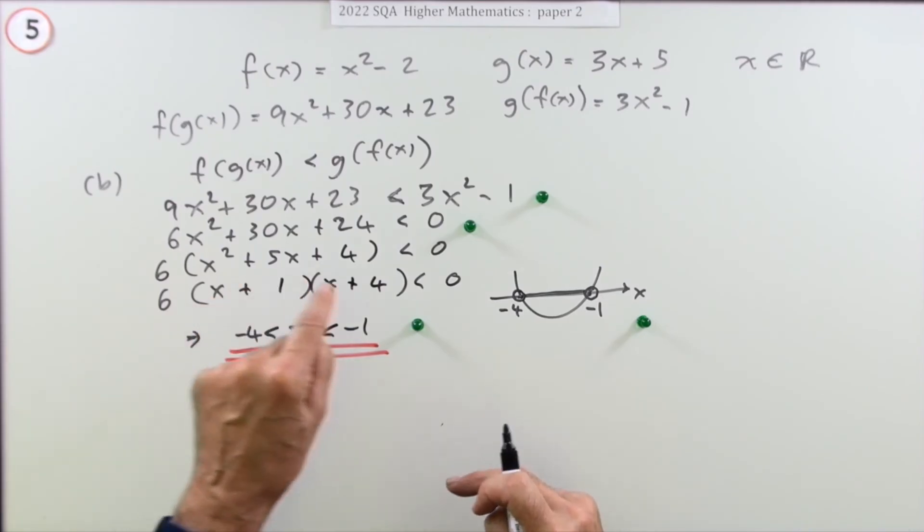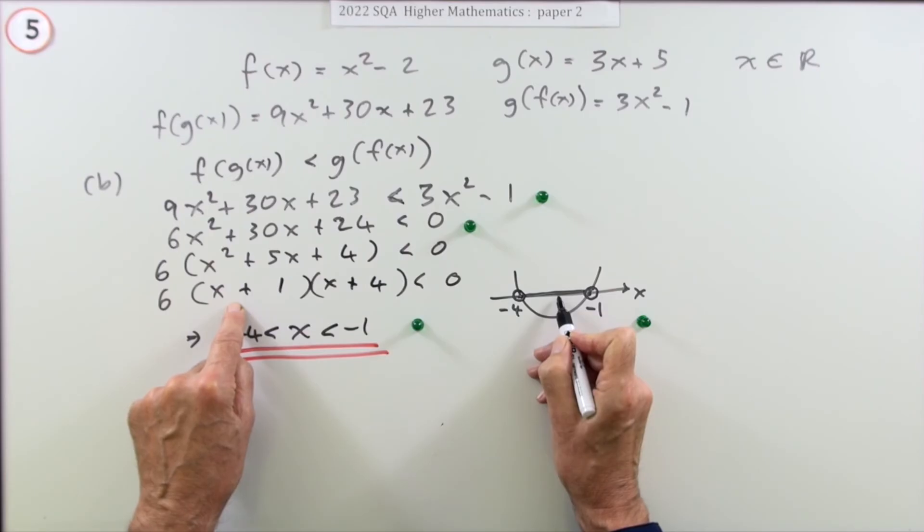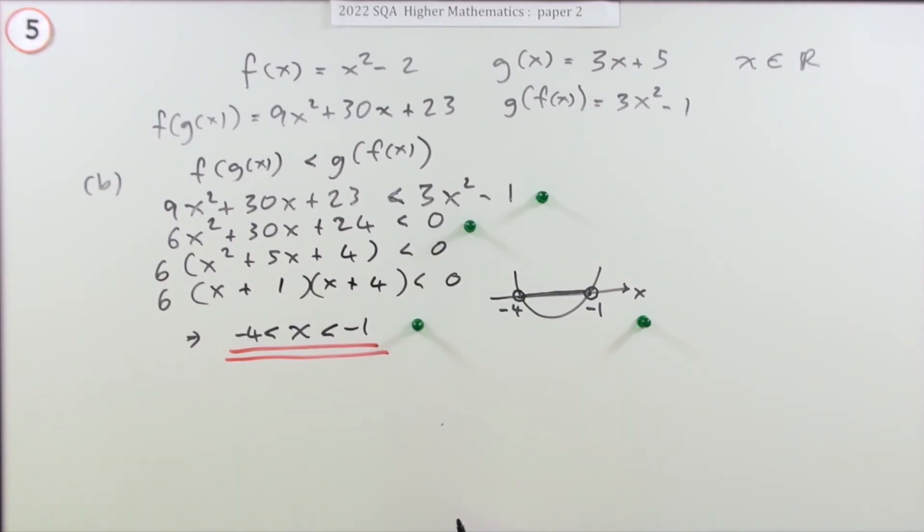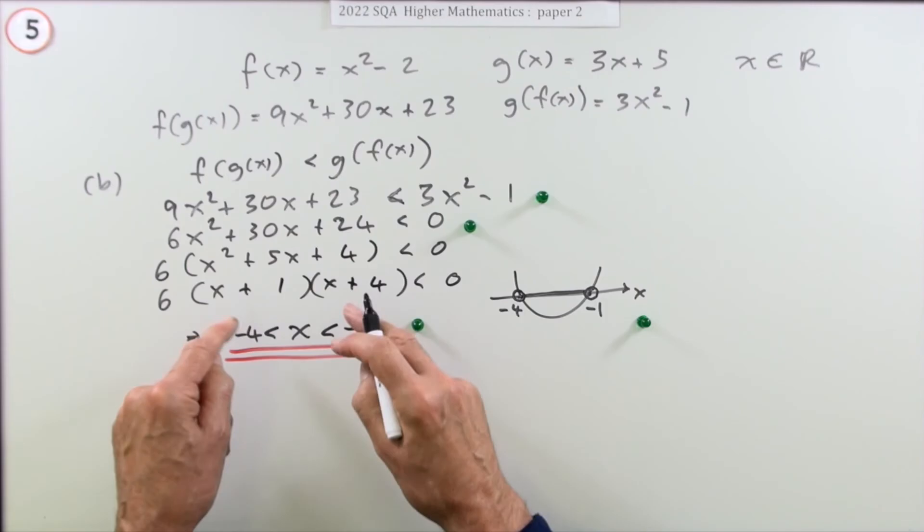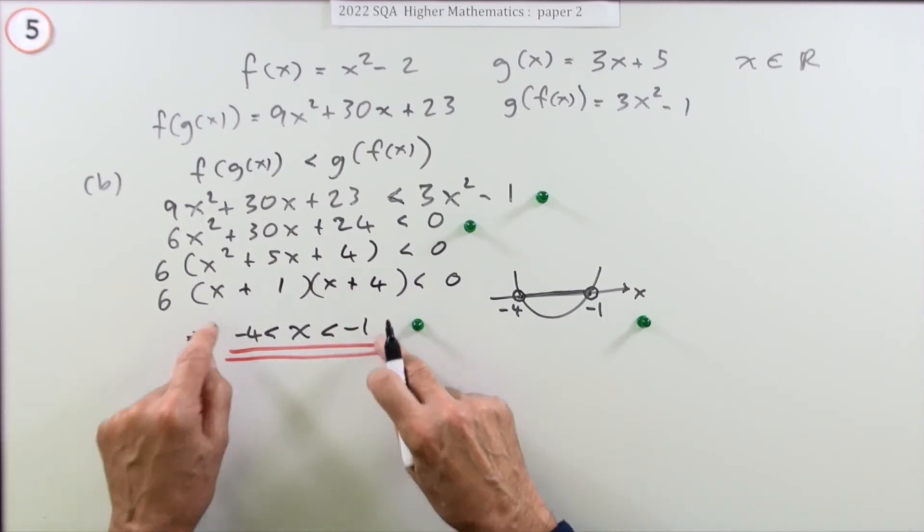If (x plus 1) is negative, x is less than negative 1. If (x plus 4) is positive, x is greater than negative 4. That does work - that's the answer. But how do you write that down? You can think through to the answer, but the mark is just for stating the result.